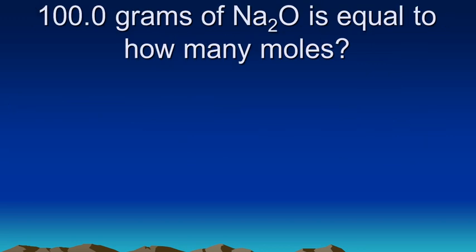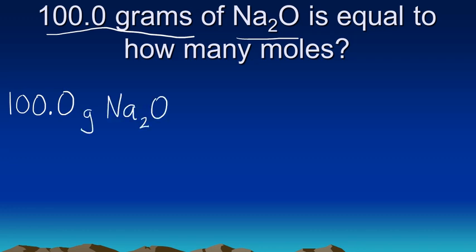Let's try another example. Let's try this problem here. It says 100.0 grams of Na2O, and that's a compound called sodium oxide, is equal to how many moles? Well, we're going to do the same thing we did earlier. We're going to start with what's given to us. So we have 100.0 grams of Na2O. And the question asks, how many moles is that equal to? So we have to convert that to moles.